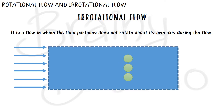In the first case, the fluid is rotating about its own axis while the flow is happening. In the second case, the fluid is not rotating about its own axis while the flow is happening. So this is the case of rotational flow and irrotational flow.